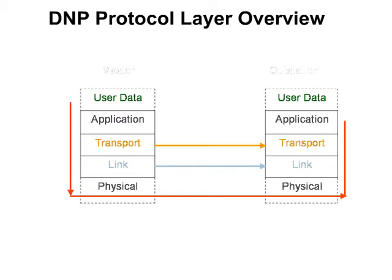DNP's transport function performs the layer-like functionality of breaking large messages into smaller messages that can be handled by the link layer. On the receiving side, the transport function reassembles these messages into the application layer messages.